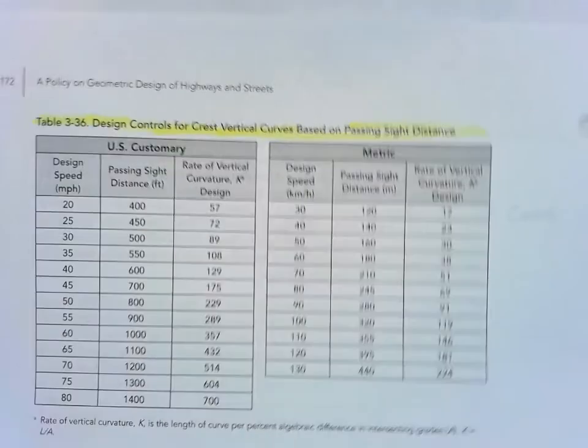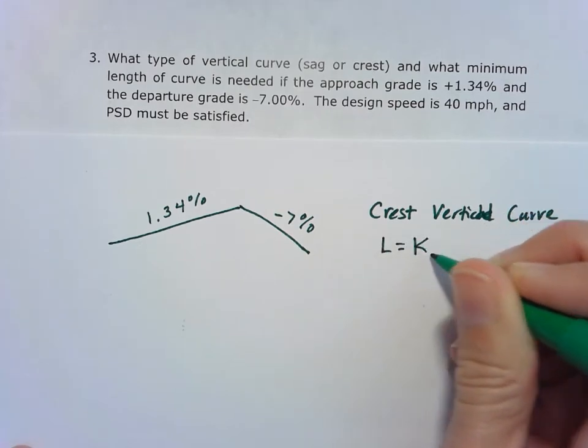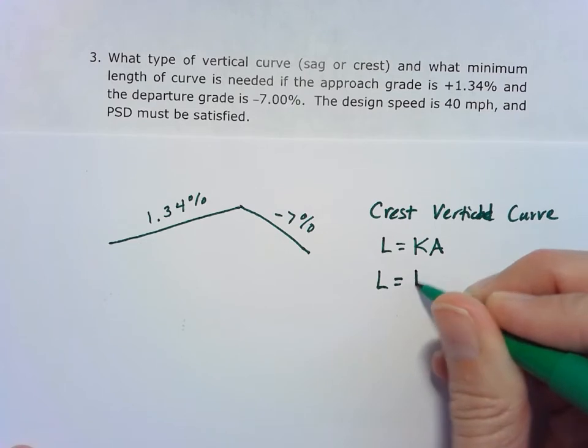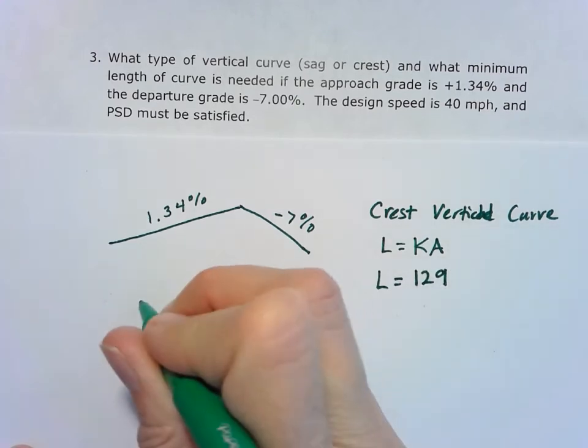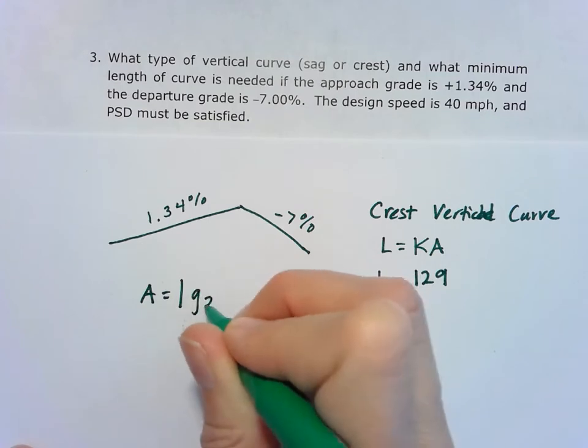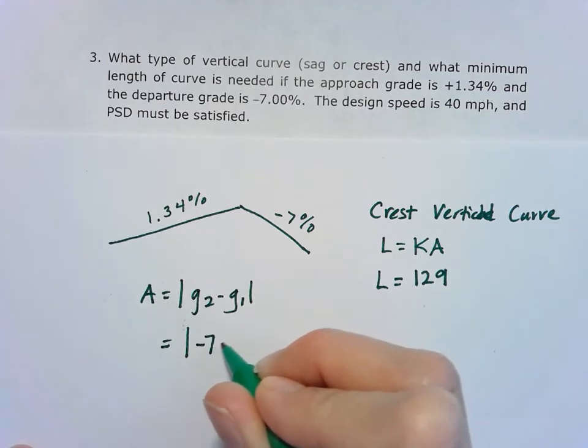So we'll use that K value, and we know that L equals KA. So in this case, our K is that 129. And our A, remember, is just that algebraic difference of the grades. So G2 minus G1, absolute value. In this case, my G2 is -7, and my G1 is 1.34.